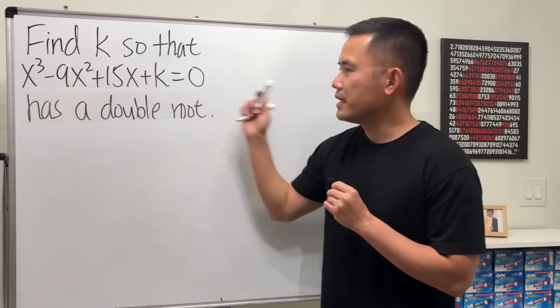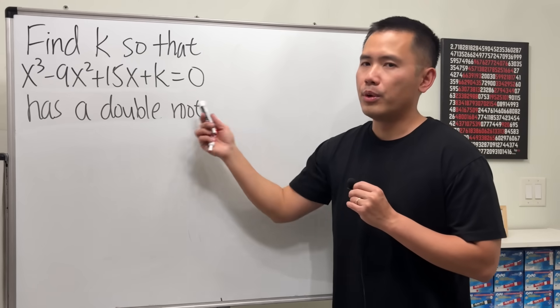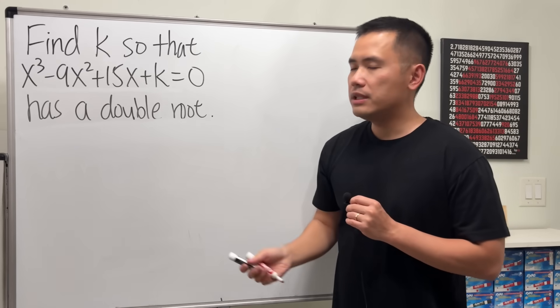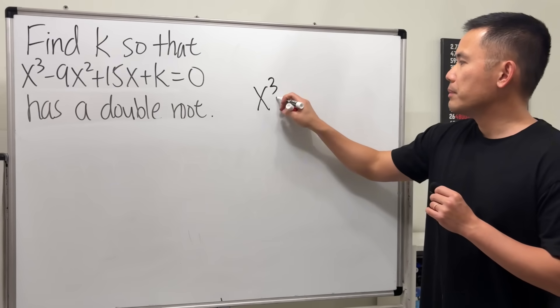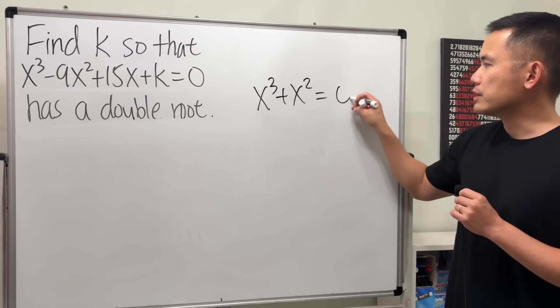Here we want to find k so that this cubic equation x³ - 9x² + 15x + k = 0 has a double root. A double root is just the root but it happens twice.